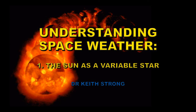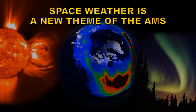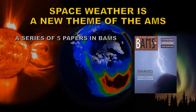Welcome. I'm starting a series of videos called 'Understanding Space Weather.' Space weather is the study of how changes on the Sun can affect the entire solar system. In the case of the Earth, it can degrade or even destroy our modern technologies and thus affect our daily lives. The first video in this series is called 'The Sun as a Variable Star.' Space weather has become a new theme of the American Meteorological Society, so I'm writing a series of five papers in the Bulletin of the American Meteorological Society, which is their flagship scientific journal, on space weather.